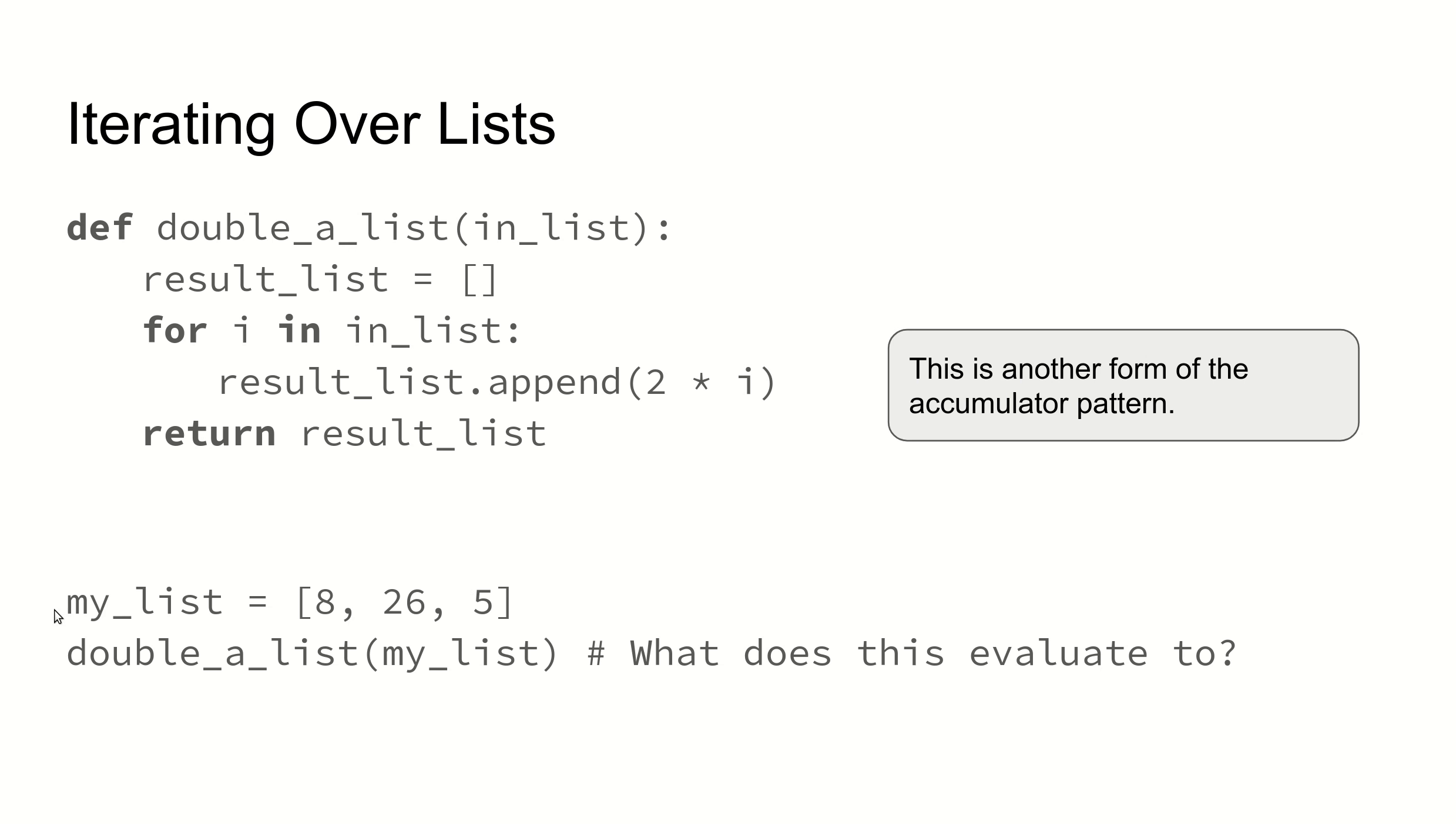My list, the variable my_list, would still be 8, 26, 5, but the result from calling double_a_list with my_list would be a new list that contains 16, 52, and 10.